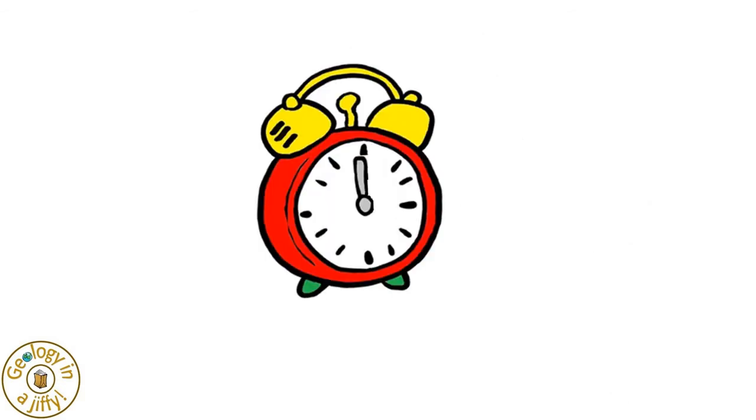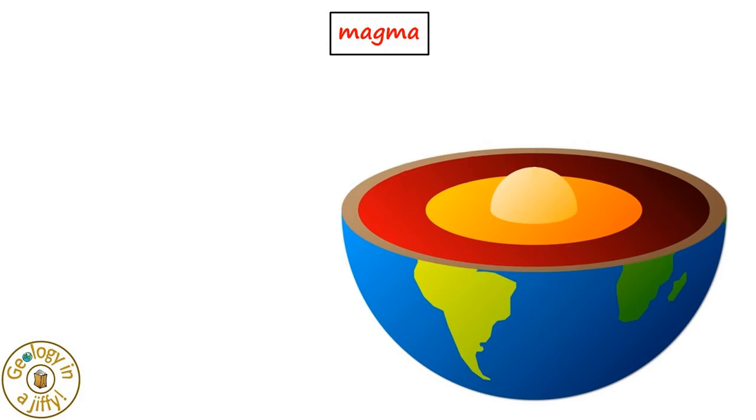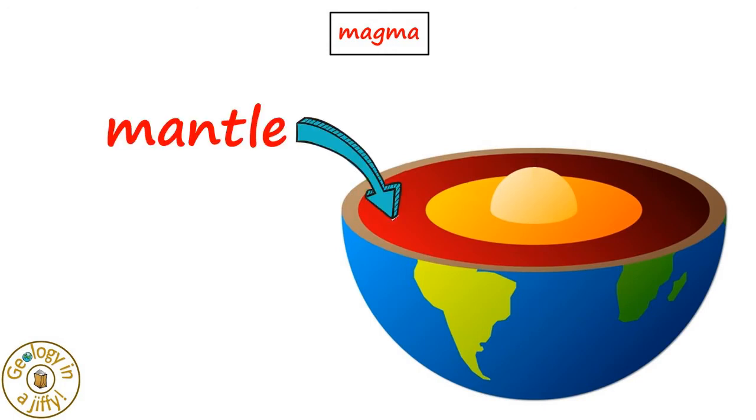So how can we link these together? A good way to start is to think of a clock. Time starts at the top, so let's start there with magma. Magma can be found inside our planet, in the layer called the mantle.